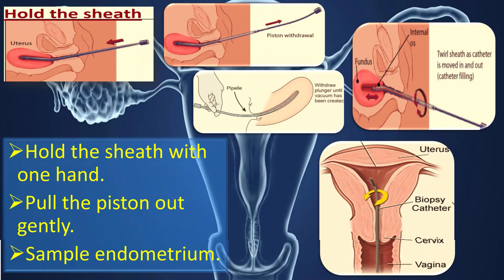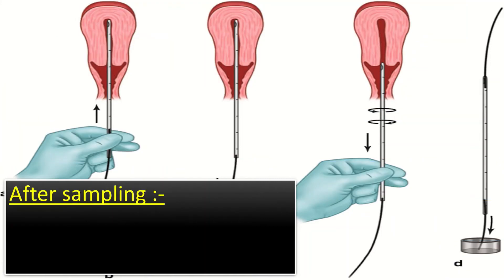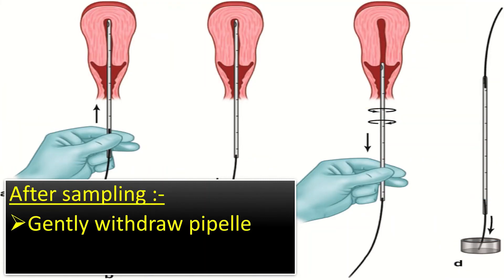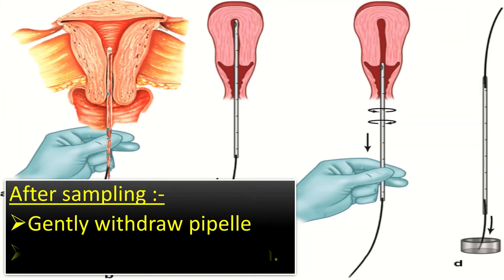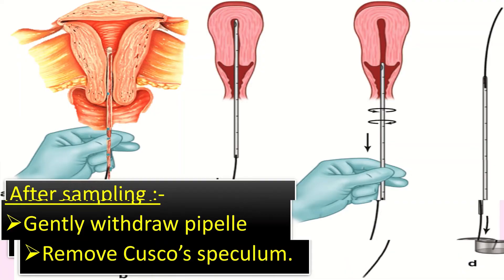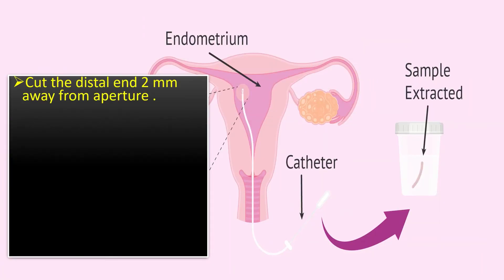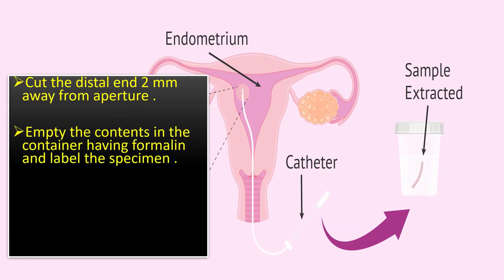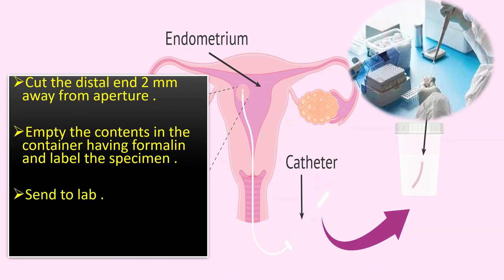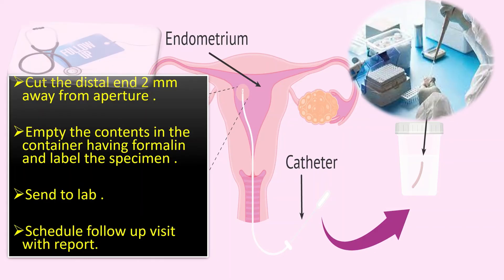After sampling, I will gently withdraw the pipel and remove the Cusco speculum. I will then cut the distal end 2 mm away from the aperture, empty the contents into a container with formalin, and label the specimen. I will send the specimen to the lab and schedule a follow-up visit with the report.